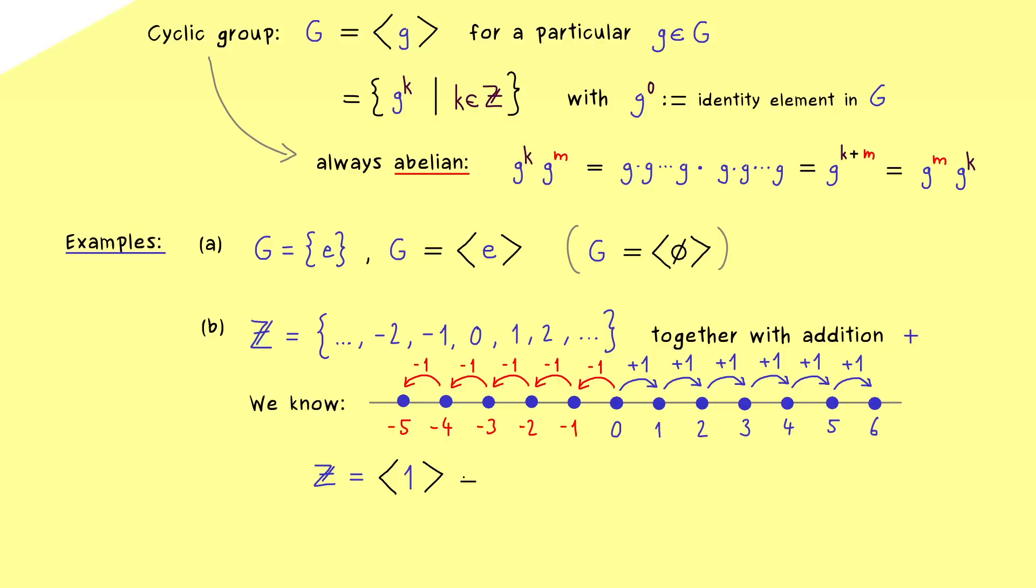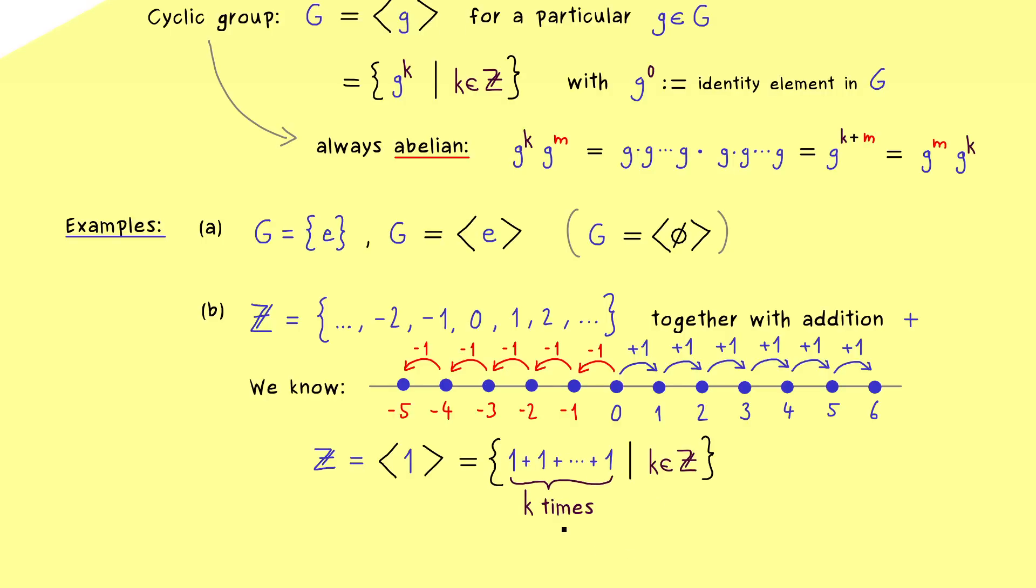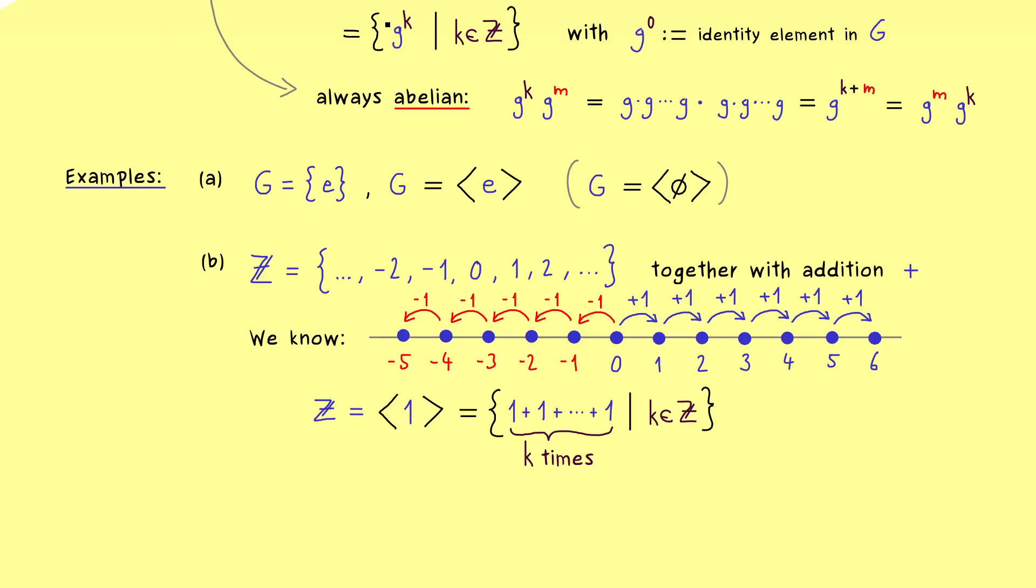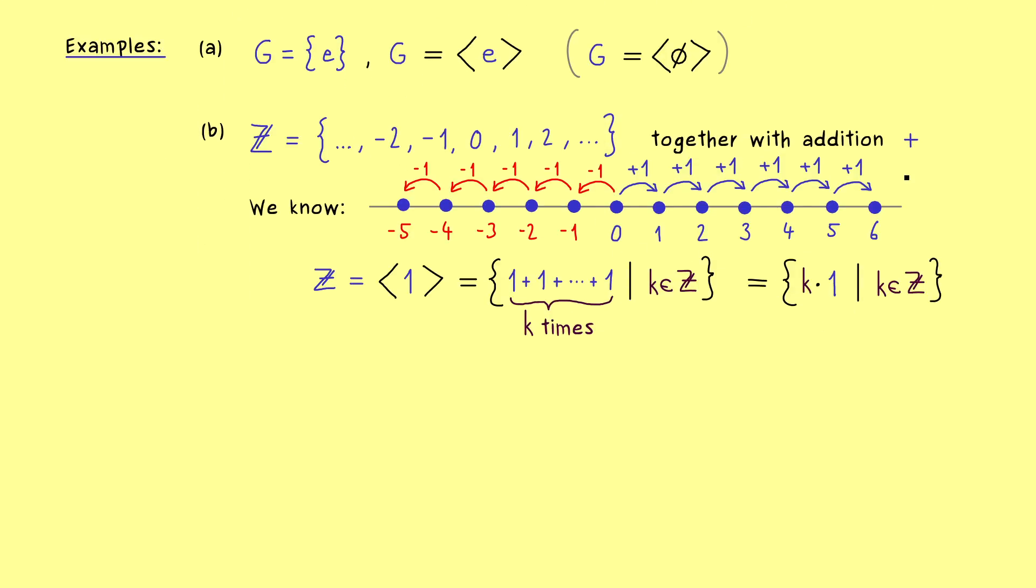Therefore Z is a cyclic group and generated by the element 1. However, since the group operation is not a multiplication, we would not use the power notation from before. However, as you already know, for a repeated addition, we also have an abbreviation. Namely, there the multiplication operation comes in. In an abstract sense this can be a little bit confusing, but it actually just works like the power notation from before. So instead of the repeated addition, one just writes k times the element 1. So this is a common abbreviation whenever the group operation is denoted as an addition.